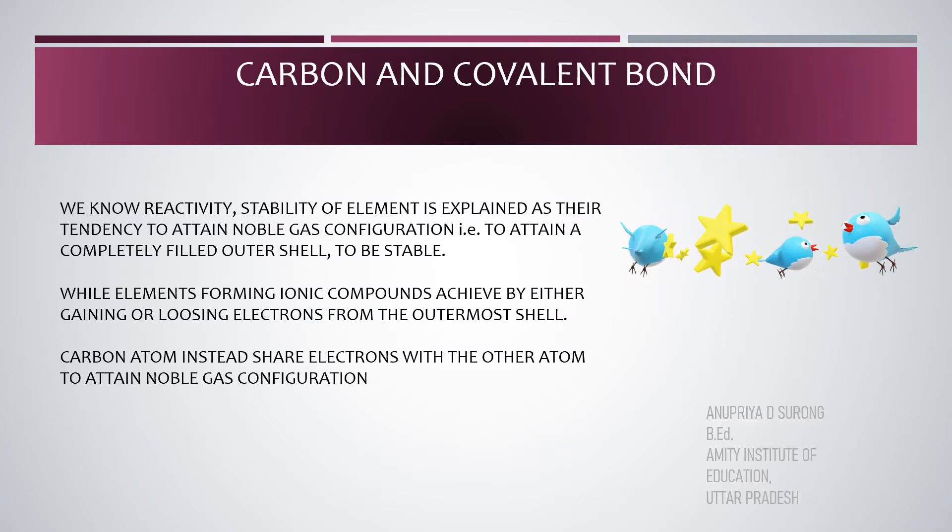We know reactivity, stability of element is explained as their tendency to attain noble gas configuration. That is, to attain a completely filled outer shell to be stable. While elements forming ionic compounds achieve by either gaining or losing electron from the outermost shell, carbon atom instead shares electrons with the other atom to attain noble gas configuration. Remember, we have learned this in the last video.